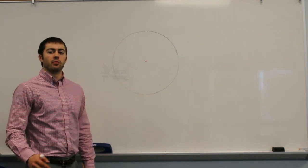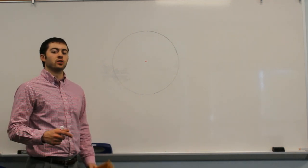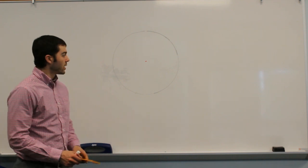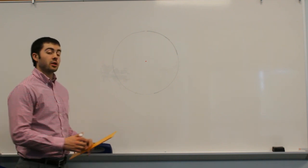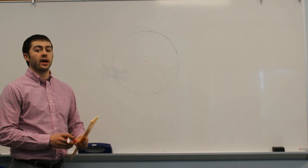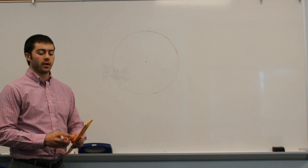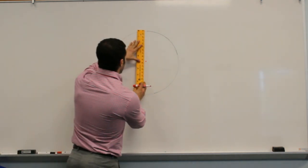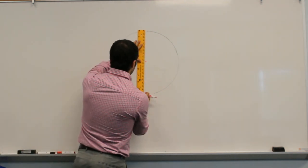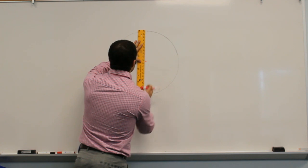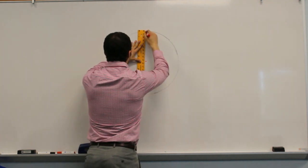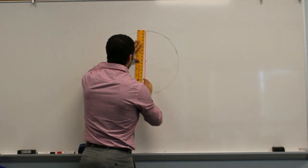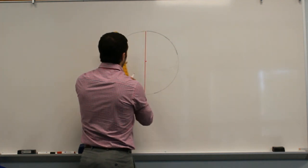In this video we're going to go over the process of inscribing a square inside of a circle. The first thing we're going to need is a diameter drawn in our circle. We can draw any diameter that connects two points of the circle going through our center.